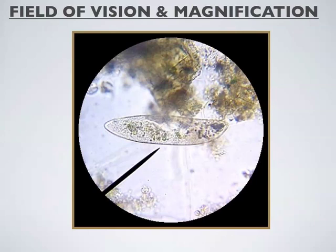So when we look at an object in the microscope, we see that circle. That's called our field of view.